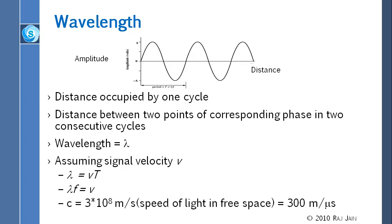All electromagnetic signals travel at the same speed in the same medium; in a different medium, they travel differently. The speed of light in free space is 300 meters per microsecond, which equals 3×10⁸ meters per second. The speed of electricity in a wire is 200 meters per microsecond — different and lower. Given any two of lambda, frequency, and speed, you can calculate the third.